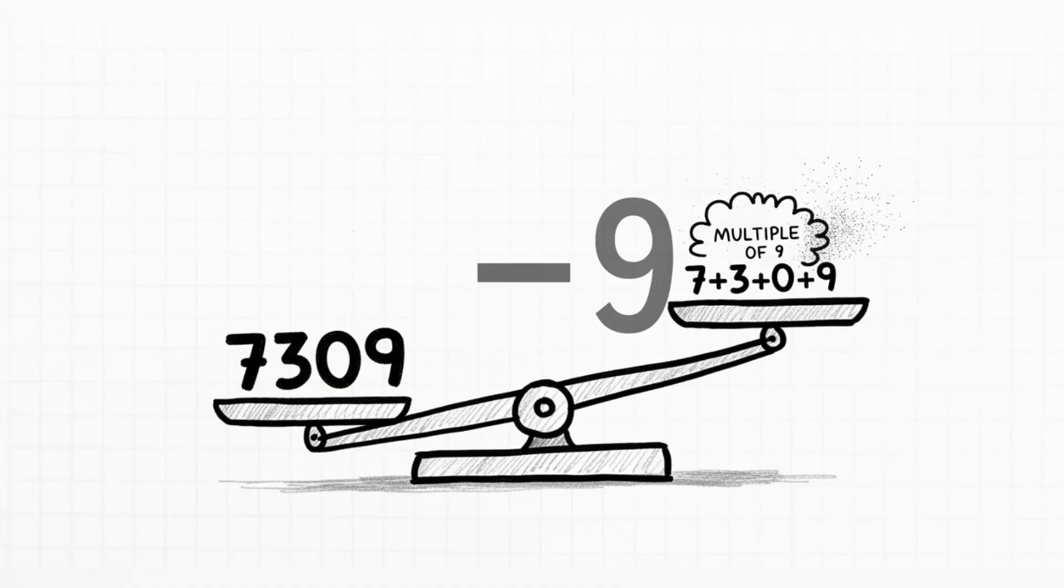So what this is really telling us is that our number, 7,309, is actually just some big multiple of 9 plus the sum of its own digits. Which means, if you want to find the remainder when you divide the whole thing by 9, you can totally ignore that first big chunk and just find the remainder of the sum of the digits. And that is why the shortcut works every single time. It's not magic, it's just clever algebra.